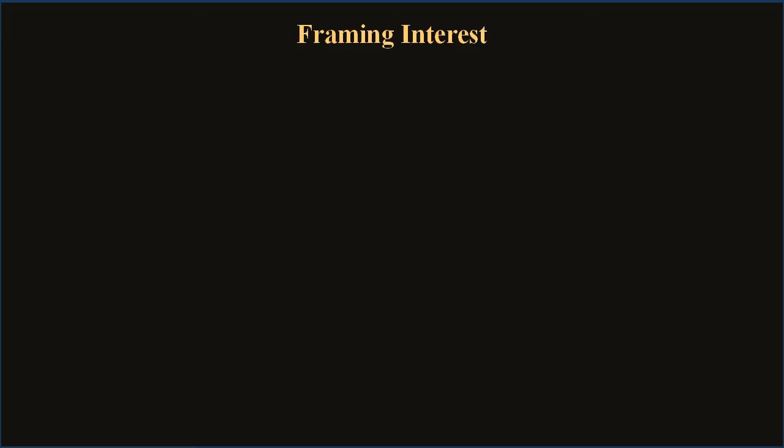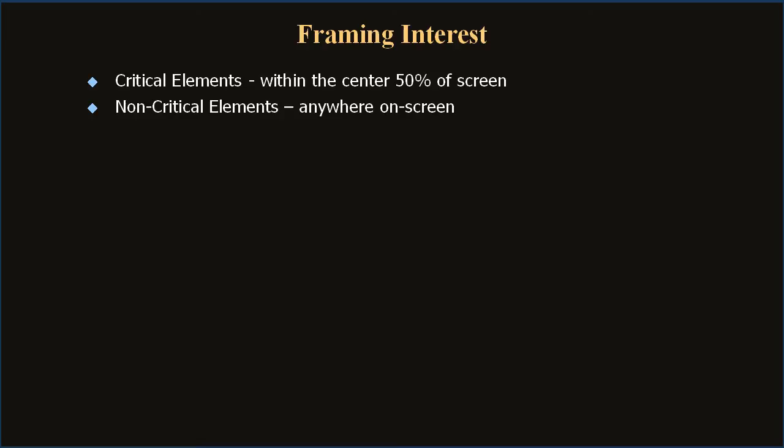Let's talk about how all this information is delivered to the player. Games are presented through a video screen, and this box of pixels frames the player's world. The direction and position of objects on screen are critical. If an object or event is pivotal, it should be presented near the center of the screen. A player will typically be pulled face-first into new game material. If an object is not critical, it can exist anywhere on screen. The only things not in view — off-screen — should be truly secret items used only in special cases.